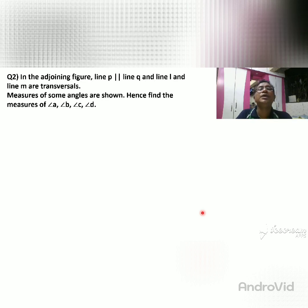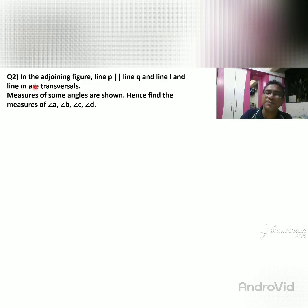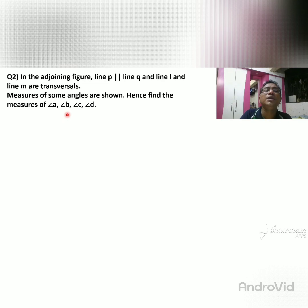Practice set 2.1, problem number 2: In the adjoining figure, line P is parallel to line Q, and lines L and M are transversals. So L is a transversal and M is a transversal. Some angle measures are shown; find the measure of angles A, B, C, and D.